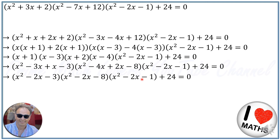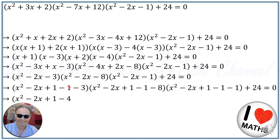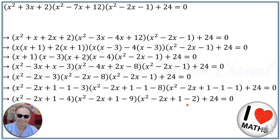We can see that all three factors contain x²-2x. If I add and subtract 1 to each factor, each becomes (x²-2x+1) minus a constant: (x²-2x+1)-4, (x²-2x+1)-9, and (x²-2x+1)-2. Simplifying the constants: -3-1 = -4, -8-1 = -9, and -1-1 = -2.